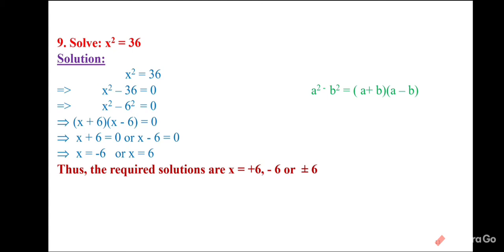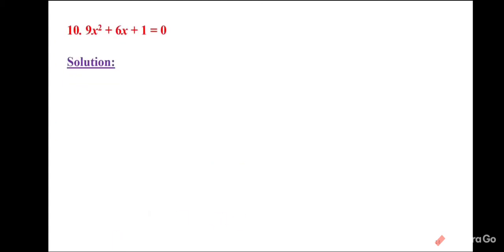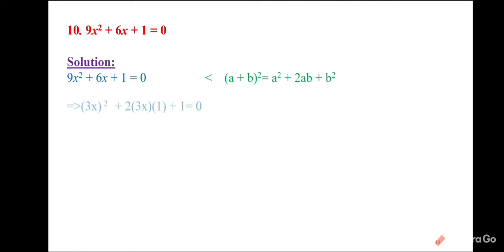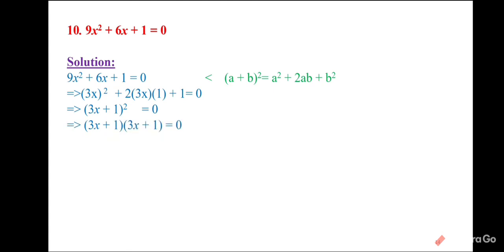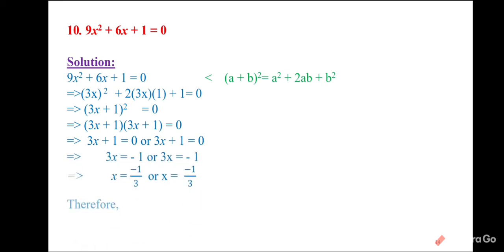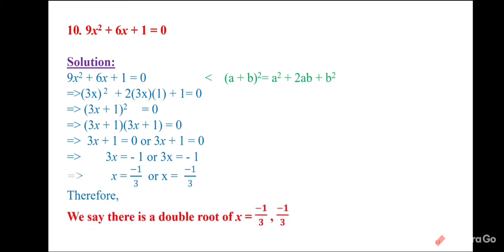Another question: 9x² + 6x + 1 = 0. This is in the form (a + b)² = a² + 2ab + b². Here 9x² = (3x)², 6x = 2(3x)(1), and 1 = 1². So the equation is (3x + 1)² = 0, giving (3x + 1)(3x + 1) = 0. Both brackets give x = −1/3. Therefore we get double roots: x = −1/3 twice.